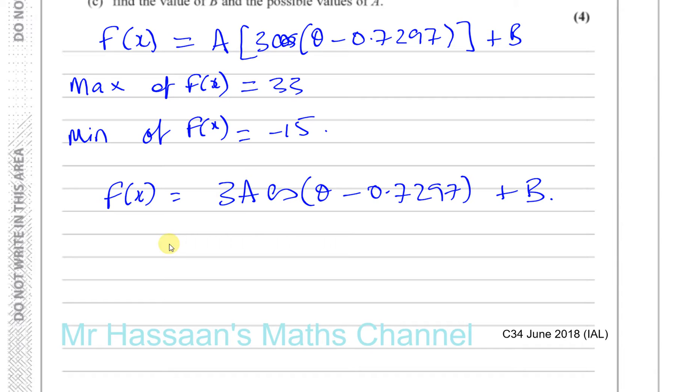So this reaches its maximum value when this is equal to 1. The maximum is when the cosine of theta minus 0.7297 is equal to 1. And the minimum is when the same expression cosine of theta minus 0.7297 is equal to minus 1.